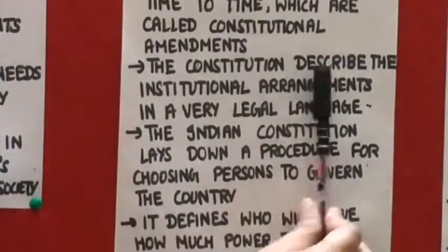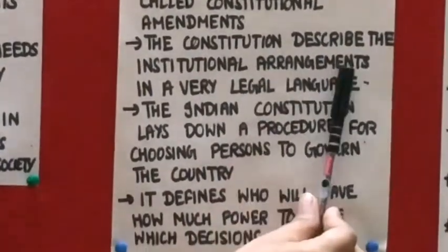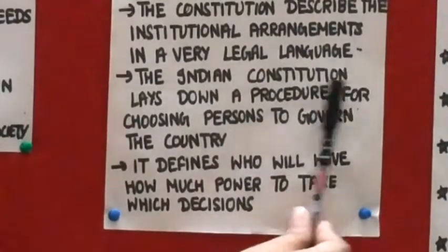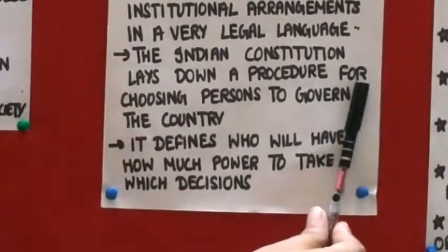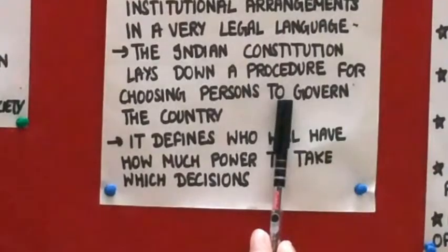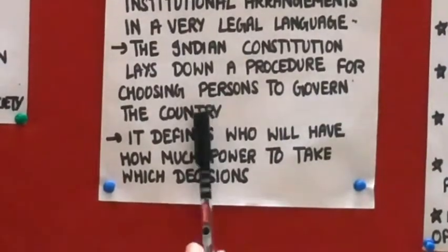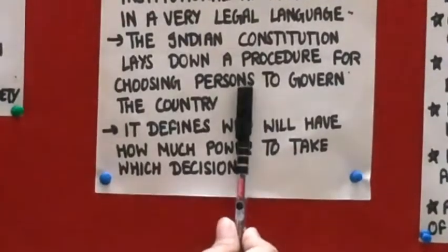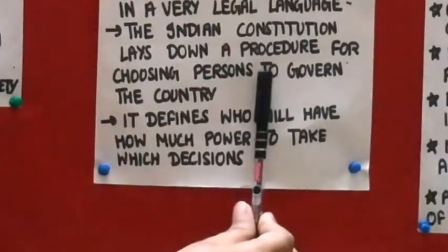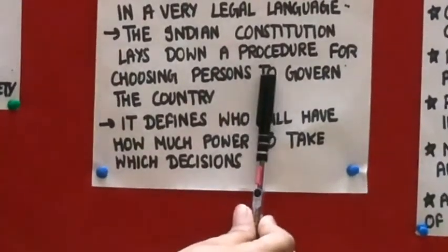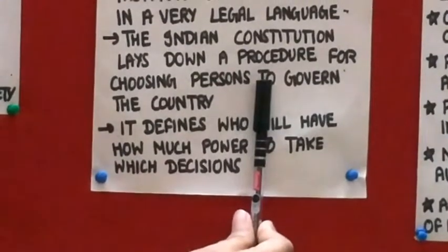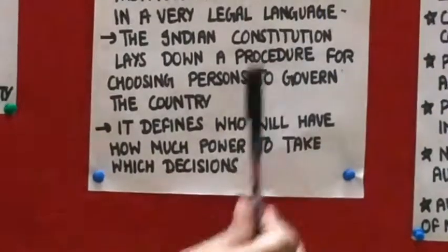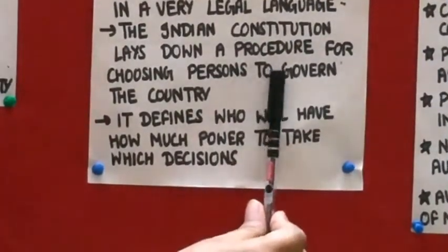Provisions are made to incorporate changes from time to time, which are called constitutional amendments. The constitution describes the institutional arrangement in very legal language. The Indian constitution lays down a procedure for choosing persons to govern the country — which procedure will be followed, how members of parliament will be elected, and how elections will be held.